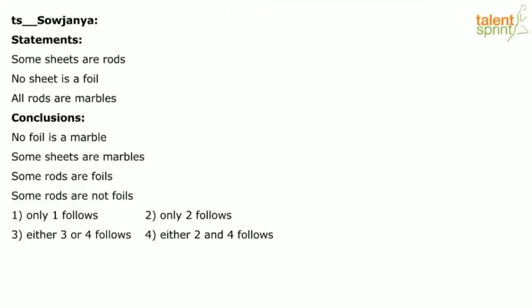Here's the question. Statements: Some sheets are rods. No sheet is a foil. All rods are marbles. Let us first draw the basic diagram for this.